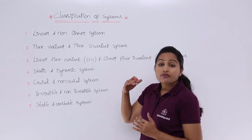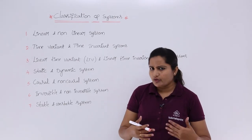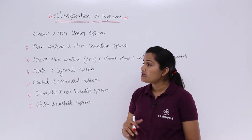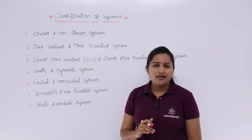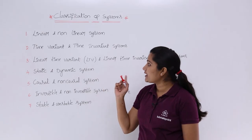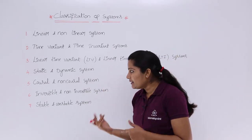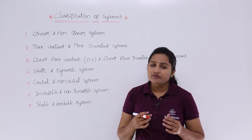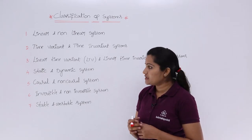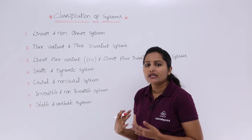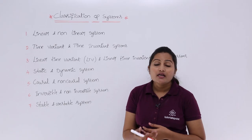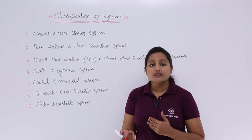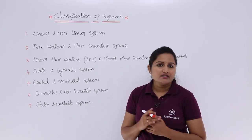We will discuss each classification in detail from next class onwards. The second classification is time variant and time invariant system. As the name indicates, if the input-output characteristics of the system are varying with time then that is said to be time variant. If the characteristics are not changing with time, that is said to be time invariant system.